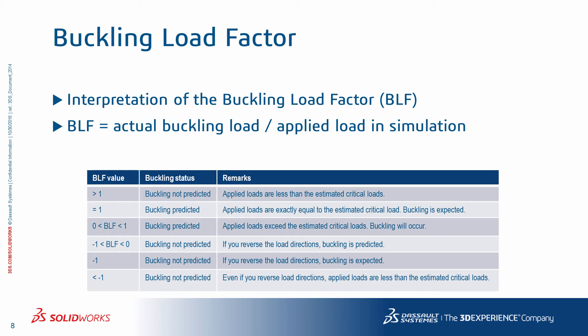Beyond the shape of buckling, the primary output of buckling analysis is the buckling load factor. This is basically a scalar multiplier representing the ratio of the actual buckling load divided by the applied load in simulation — you can think of it as a safety factor for buckling. A buckling load factor greater than 1 means that the applied loads are less than the estimated critical load. For example, if the program finds a buckling load factor of 2, it means you have to double the existing loads to cause buckling.